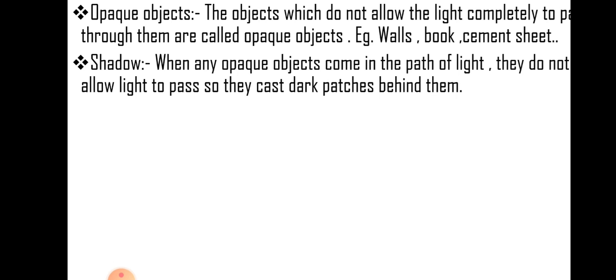Now, shadow is formed because of the light. When an opaque object comes in path of the light, they do not allow light to pass. So they cast dark patches behind them which are known as shadow. These dark patches are called shadow.